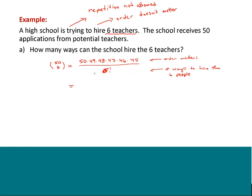So for this one it turns out to be 15,890,700. That many ways would be the answer there. And that's it — it's literally it.